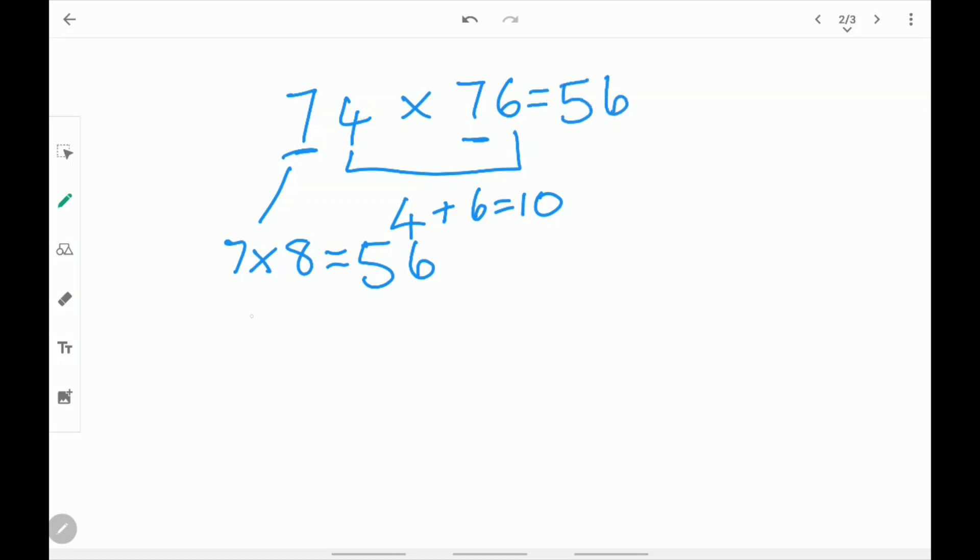Next multiply the last digits which are 4 and 6. 4 times 6 is 24. Next write 24 over here. The answer for 74 times 76 is 5624.